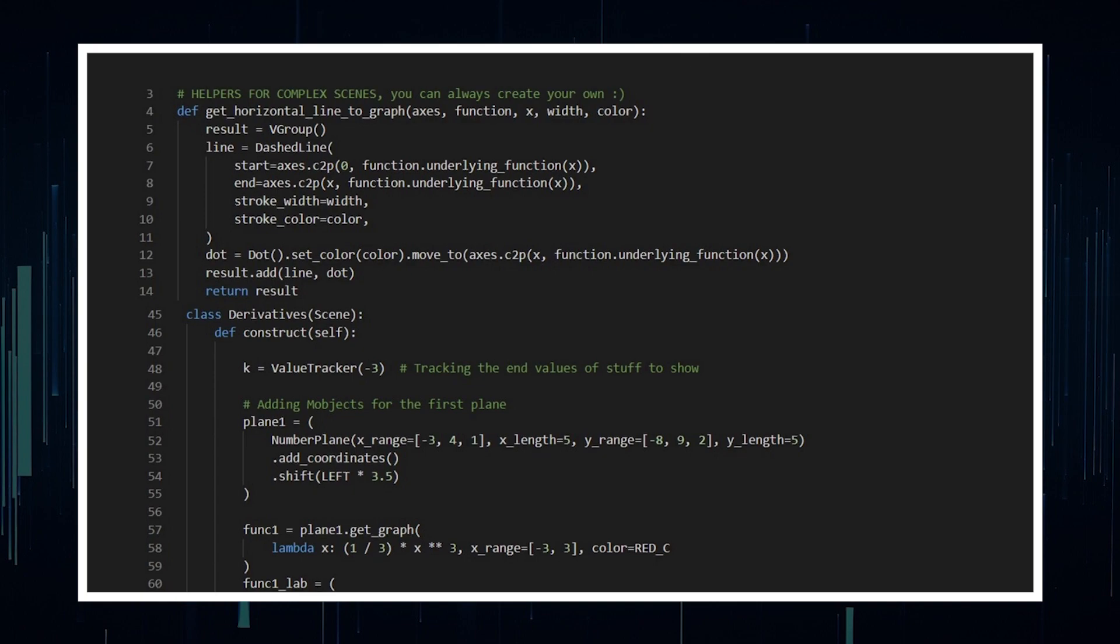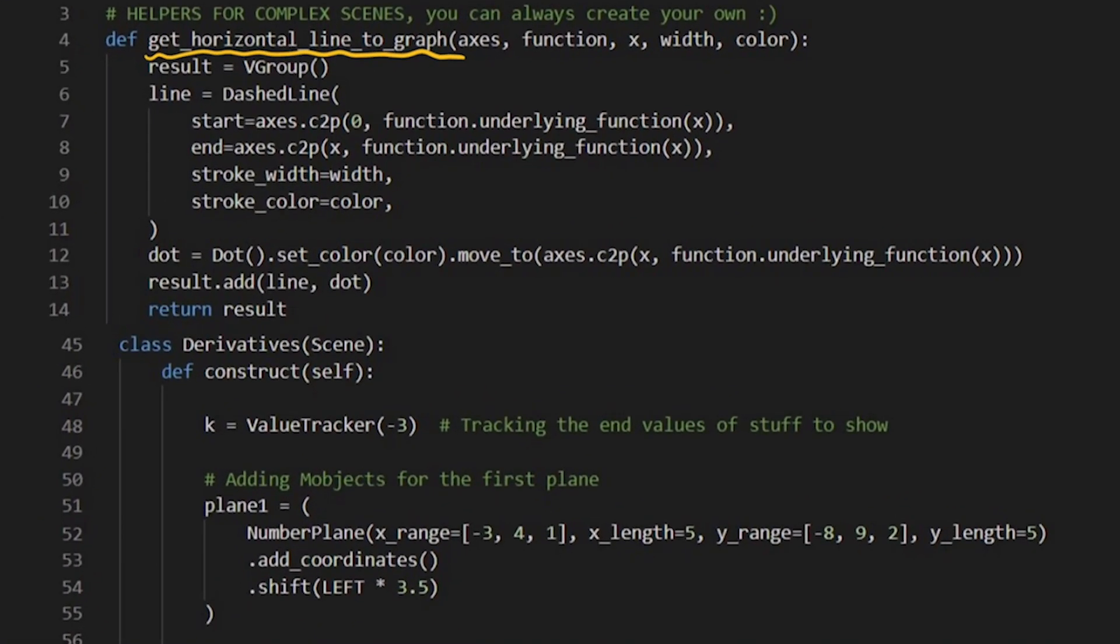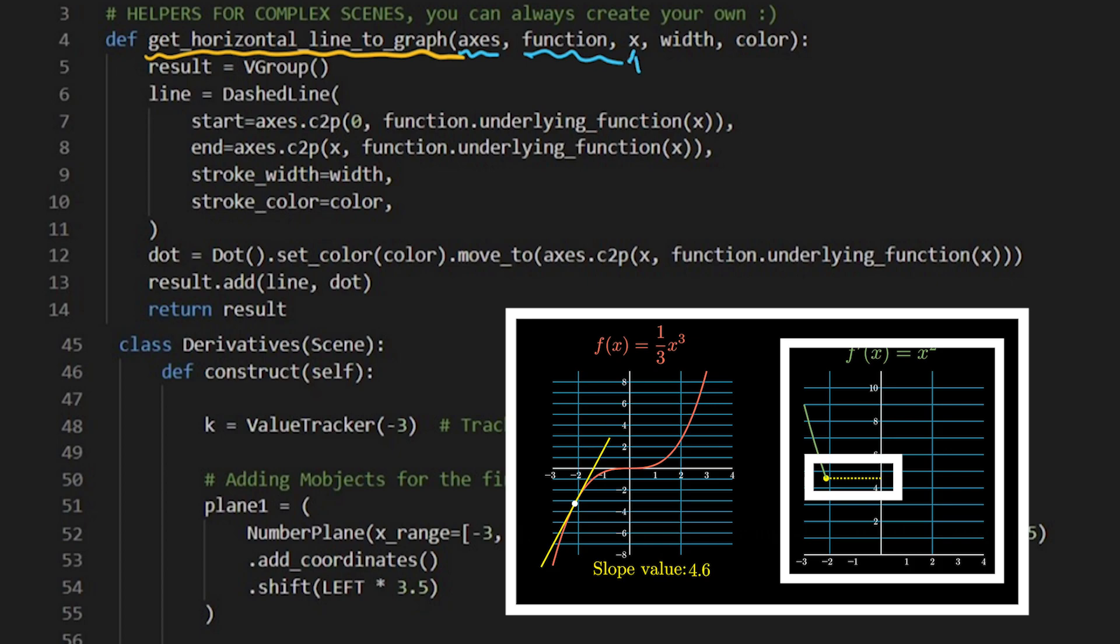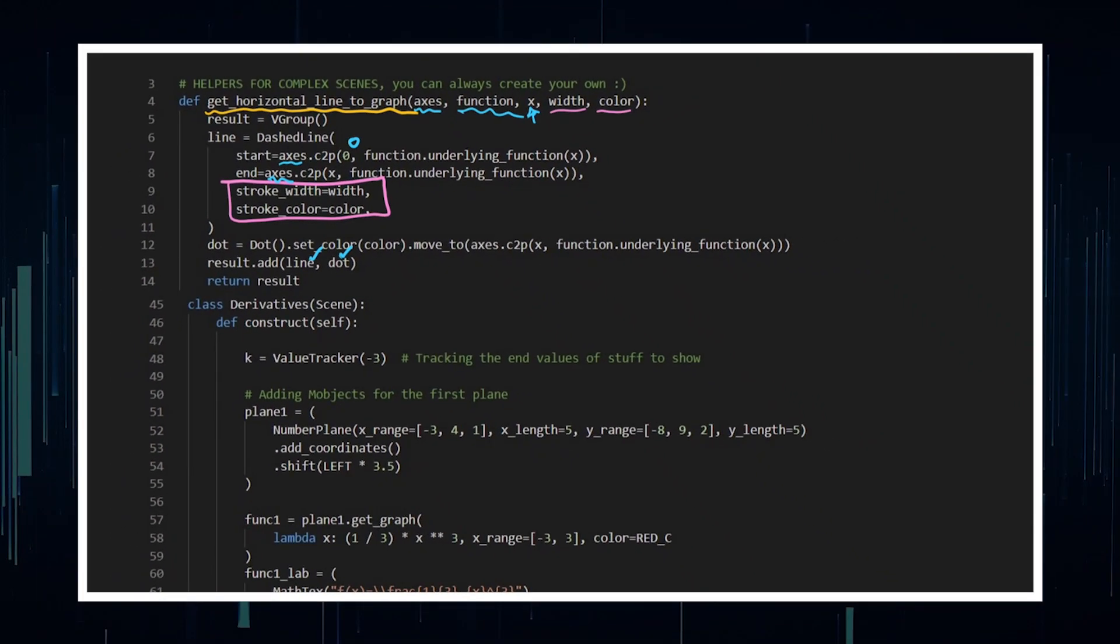So going over the first scene, I just want to highlight the fact that I am creating my own definition, getHorizontalLineToGraph, just because it is not templated within a callable function. The way that I am doing that is I want to be able to call a line onto a particular axis to a particular function inputting a particular X point. This stroke width and stroke color is at the end here. You can see it gives me a result, which is a vector group, and the vector group consists of a line and a dot. This dash line starts and ends on the axis coordinates point, giving us a horizontal line.